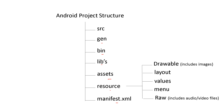The folders are: SRC folder, gen folder, bin folder, lib, assets, resources, and manifest.xml. Resources includes drawable resource, layout, values, menu, and raw.